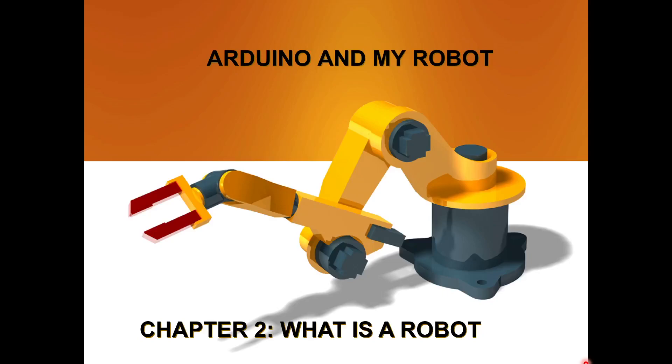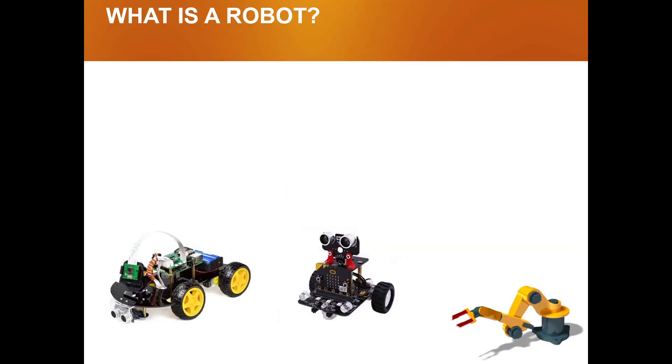Hello everyone, welcome to Arduino and My Robot course. This is chapter 2 and we'll be learning what is a robot. So when you think of a robot, I can imagine you would be thinking of some movie where you can see a Terminator-like creature hunting for people. Yes, that is a robot, but there are many more types of robots.